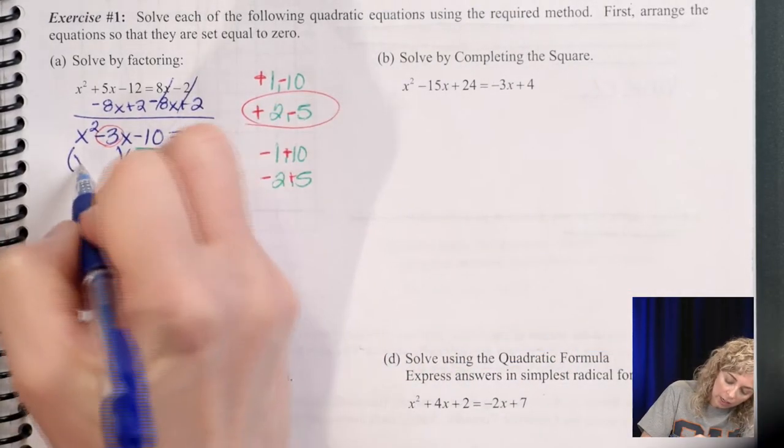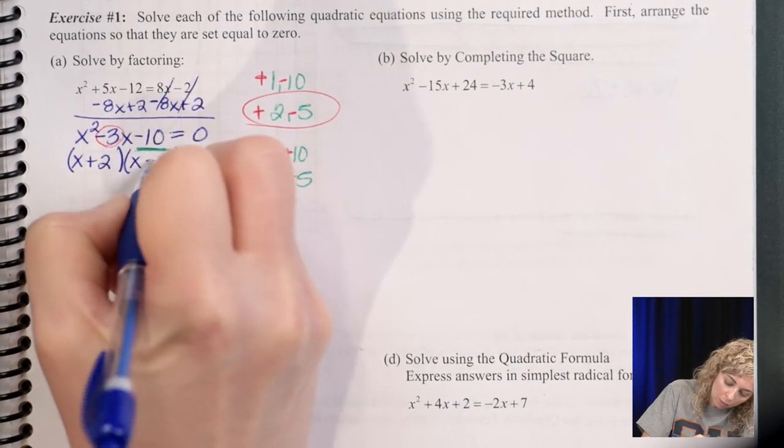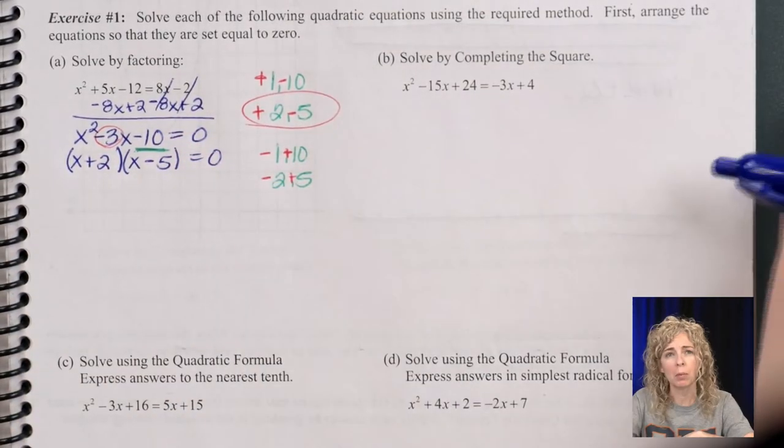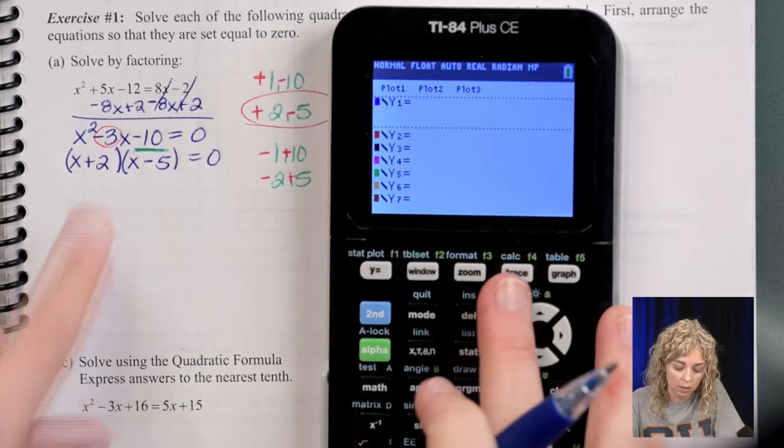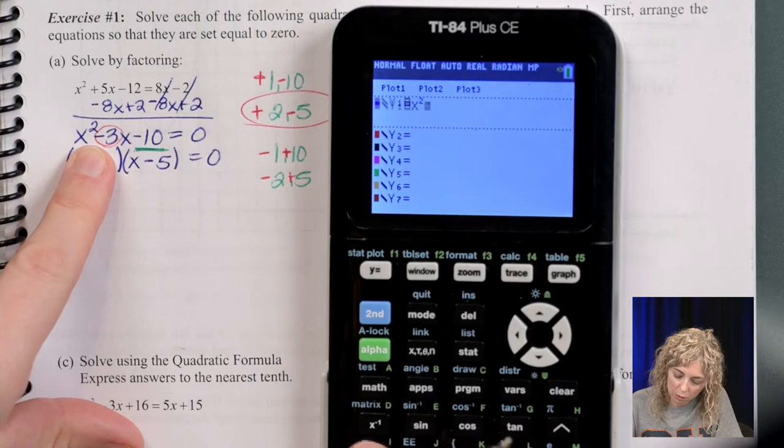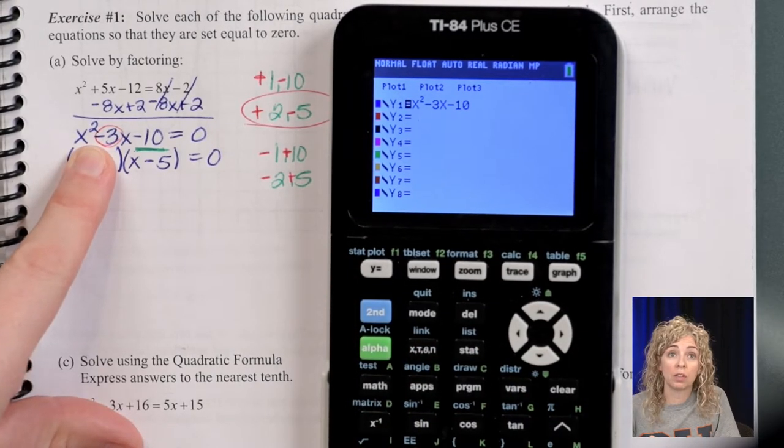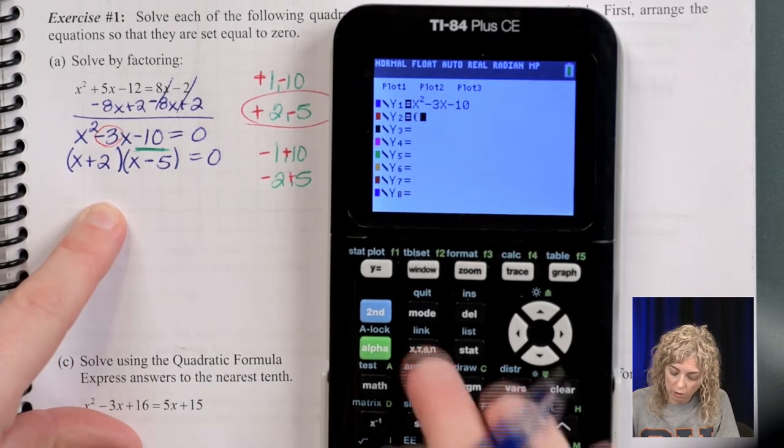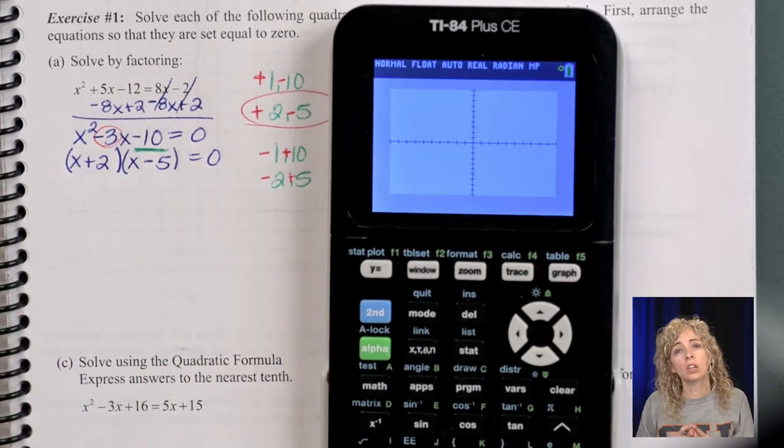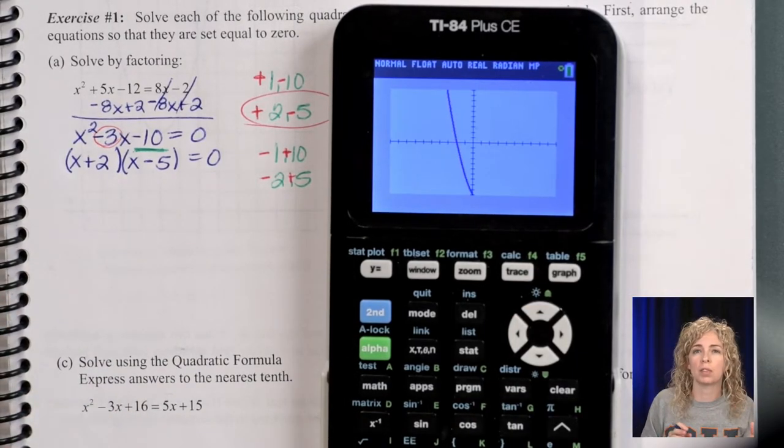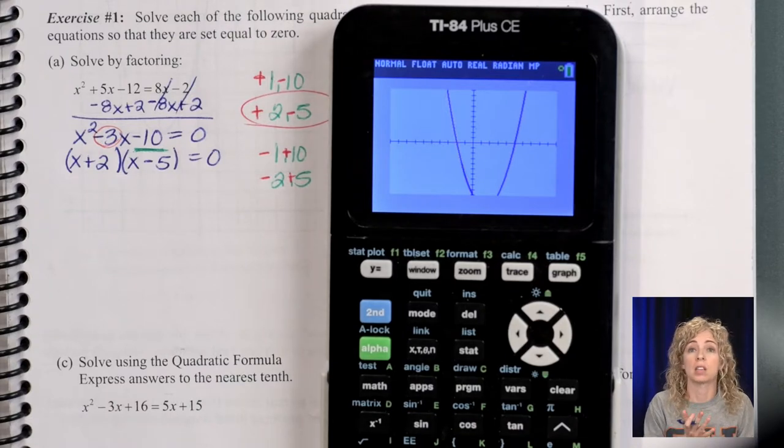So it's x and x to get the x squared, then plus 2 minus 5. And remember, you can always check that you're right. A trick on the calculator: you type in your trinomial, so x squared minus 3x minus 10. And then underneath, you type your factors, so we have x plus 2, x minus 5, graph. If the second graph goes right over the top of the first graph, then you have it factored correctly. And we can see that happening here.